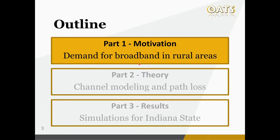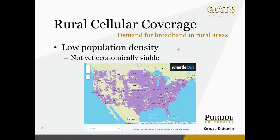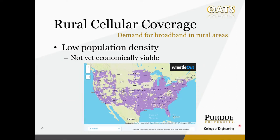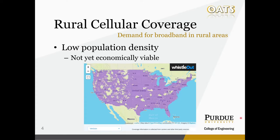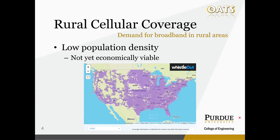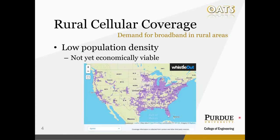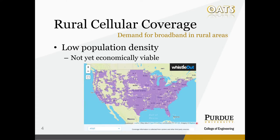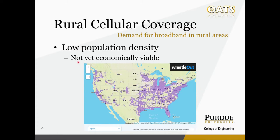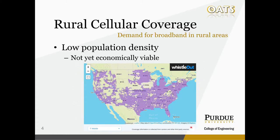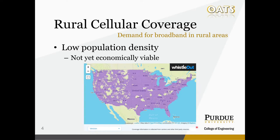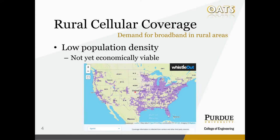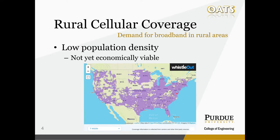A little about the background. Traditionally, because of the low population density and the high costs of infrastructure construction, rural areas are of very low priority in terms of cellular broadband coverage. Here we have some third-party coverage maps for major cellular service providers to illustrate this situation. As we can see, the cellular coverage for rural areas in the US is considerably worse compared to urban regions.